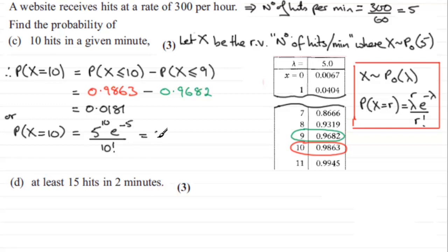Now if you work this out, you'll find that you get 0.01813 and so on. So if we round this to say 3 significant figures, then it's going to be 0.0181 to 3 significant figures. And you can see that agrees with this value up here from the tables.